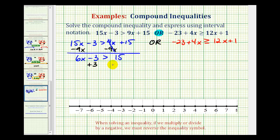For the next step, we'll add 3 to both sides. This would be zero, so we have 6x is greater than 18, and now we'll divide both sides by 6. So we have x is greater than 3.